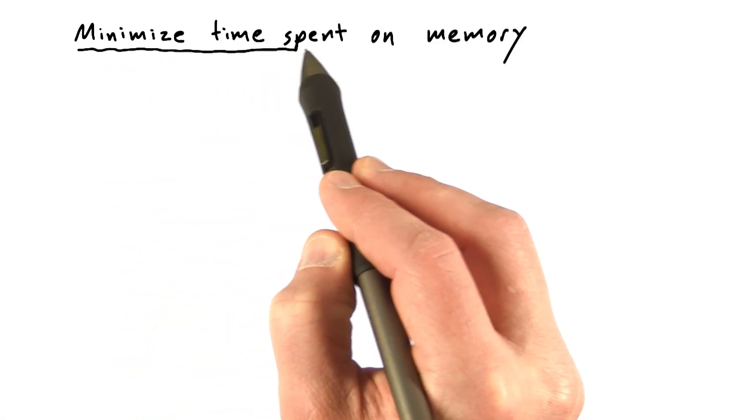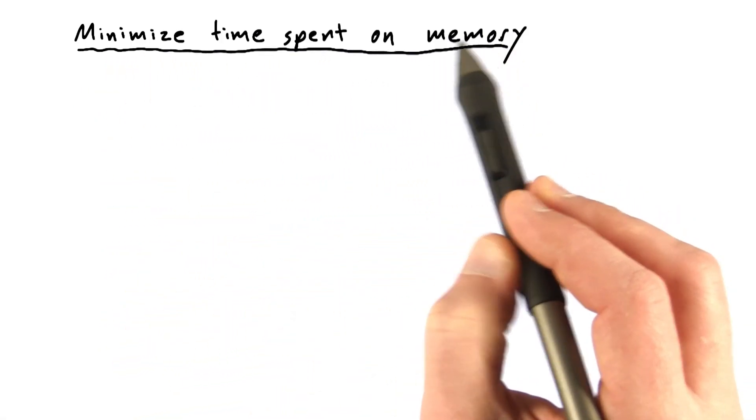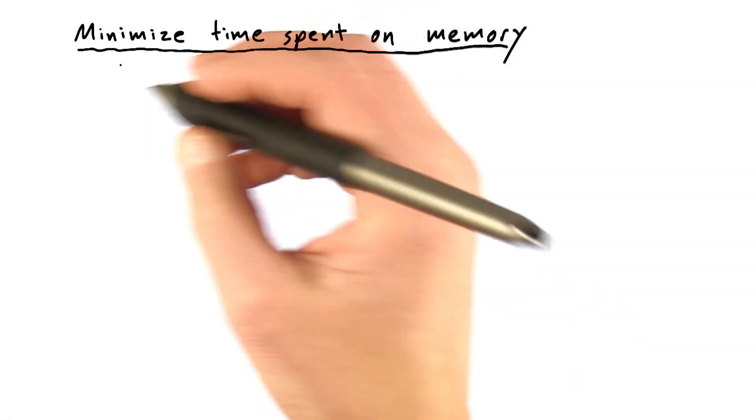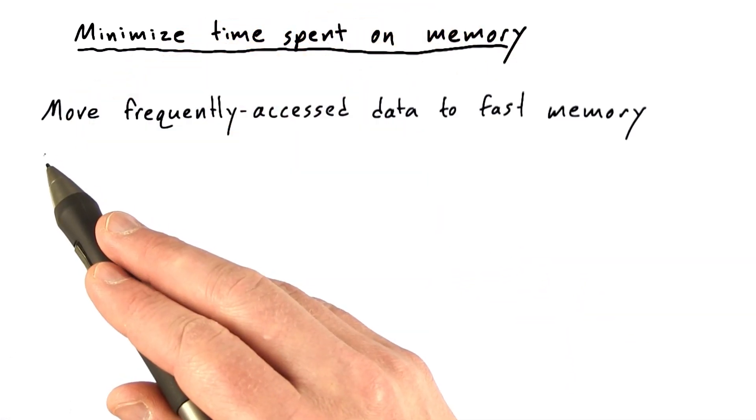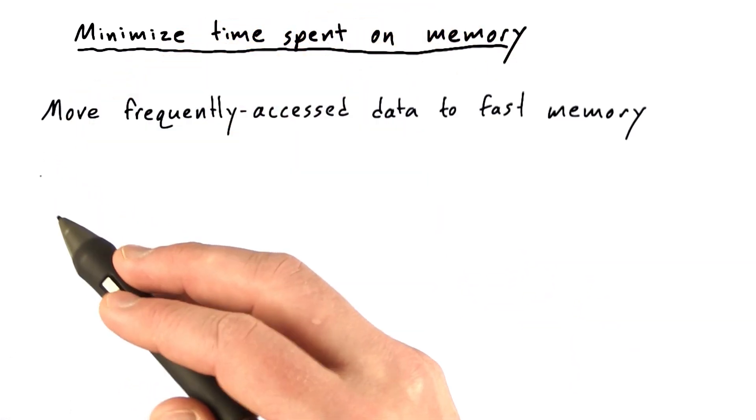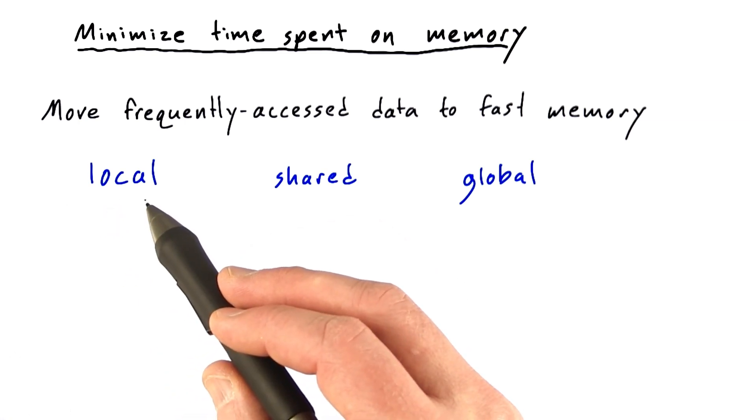Let's talk about ways to minimize time spent on memory accesses. The first strategy to think about is moving frequently accessed data to fast memory. We've talked about the memory spaces available to the GPU.